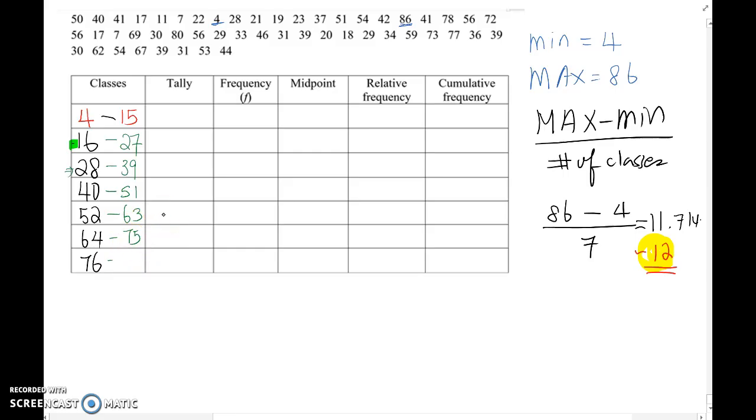And now, finding the last class upper limit, you combine 12 here. The reason is, if interval between two lower limit is 12, then interval between two upper limit also 12 as well. So this become 87. Good?